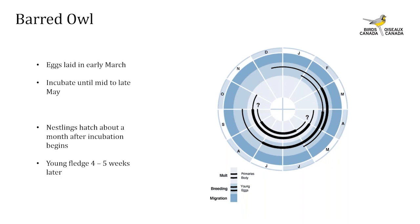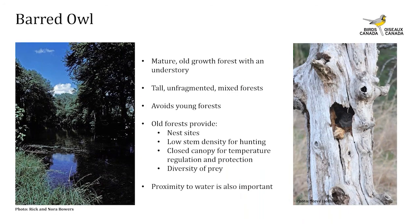In their eastern range, barred owl numbers are declining due to the loss of old-growth forests. They are a non-migratory owl; in Ontario eggs are laid in early March and incubation takes place until mid to late May. Nestlings hatch about a month after incubation begins and young fledge four to five weeks after hatching. Barred owls prefer mature and old forest habitat with a well-developed understory. In Ontario they're strongly associated with tall, unfragmented mixed-wood forests. Old forests provide nest sites, lower tree stem density for easier hunting, a closed canopy for temperature regulation, and structural complexity providing prey diversity.